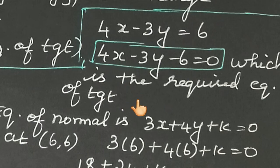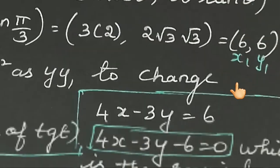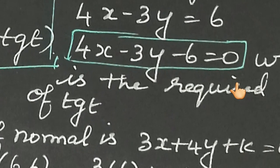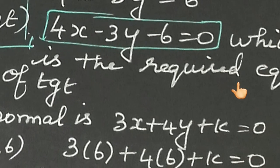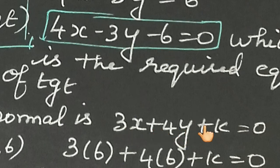Now find the equation of the normal. The tangent and normal are perpendicular to each other. To get the equation of the normal from the tangent equation 4x minus 3y minus 6 equals 0, interchange the x and y coefficients and change the sign of one, giving 3x plus 4y plus k equals 0.